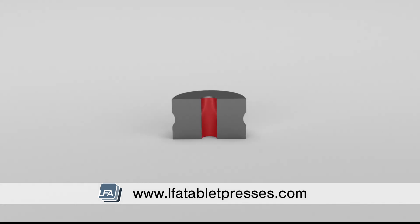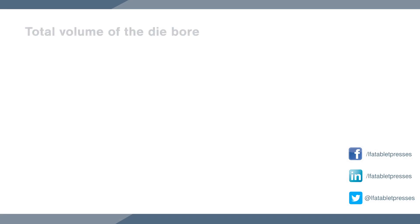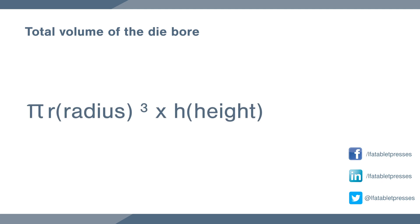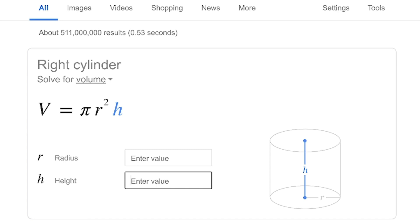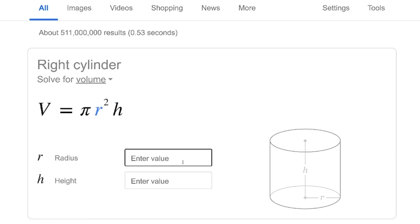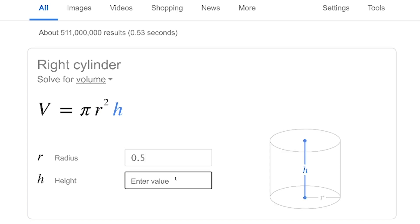From this we need to calculate the total volume of our die bore and find out the cubic centimetres inside. The formula to measure this is pi times radius squared times height. Radius is half the die bore diameter, but there's a much easier way to do this — Google has a great tool which we'll link below. Using that tool: 0.5 centimetres is our radius and 1.2 centimetres is our height, which gives us 0.94 centimetres cubed.